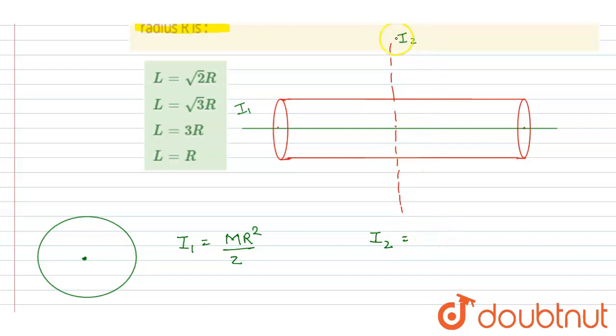The moment of inertia of this cylinder about an axis passing through the center of mass and perpendicular to the length equals ML²/12 + MR²/4.